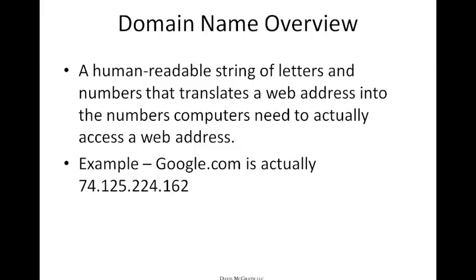Domain names are a human-readable string of letters and numbers that translate a web address into the numbers that computers need to access a web address. For example, we might think of Google.com as the domain name, whereas my computer tells me that Google.com is actually 74.125.224.162. Domain names are more than just web addresses — they can be used as uniform resource locators for pointing people to particular services and also as email addresses.